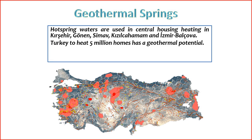The country's geothermal potential plays a crucial role in achieving sustainability goals and reducing dependence on fossil fuels. The utilization of hot spring waters for central heating is a noteworthy application of geothermal energy in various regions of Turkey. Specifically, in places like Kırşehir, Gönen, Simav, Kızılcahamam, and İzmir Balçova, hot spring waters are harnessed to provide heating for central housing. This application is part of Turkey's broader efforts to maximize its geothermal potential.